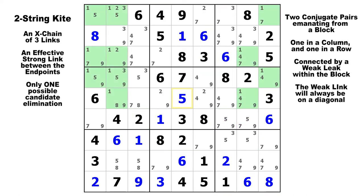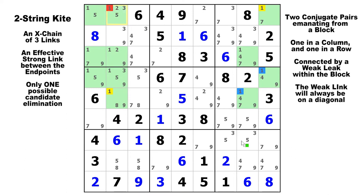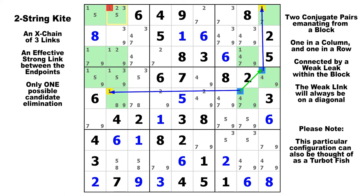On candidate one, in column nine we've got a strong link from there to there. And in row five, we've got a strong link from there to there. Those are two conjugate pairs connected by a diagonal weak link in block six. The elimination cell is in row one, column two, because that one can see both of the yellow ones, so the one in row one, column two must be false.